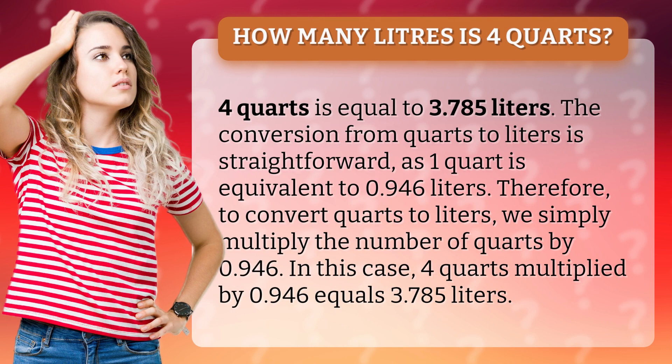The conversion from quarts to liters is straightforward, as 1 quart is equivalent to 0.946 liters. Therefore, to convert quarts to liters, we simply multiply the number of quarts by 0.946. In this case, 4 quarts multiplied by 0.946 equals 3.785 liters.